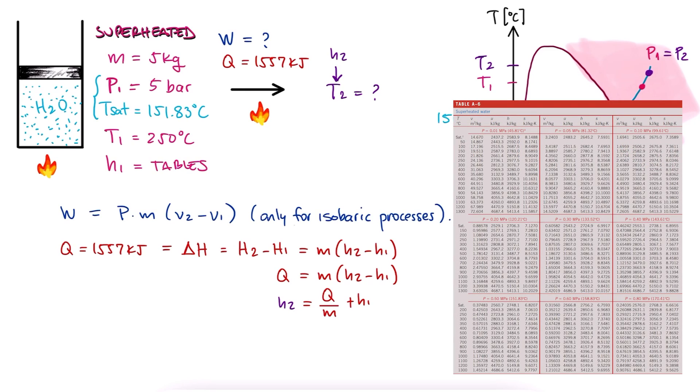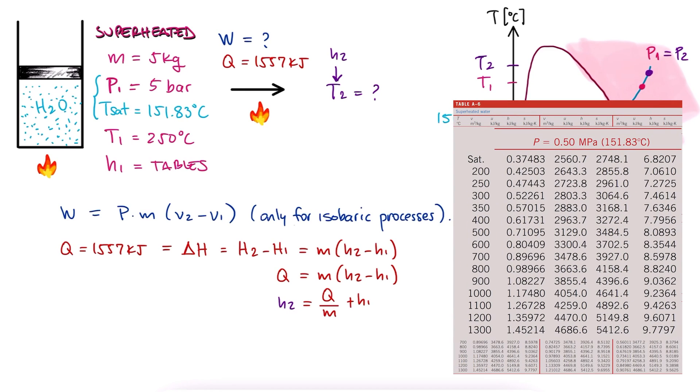By looking up a pressure of 0.5 MPa in the superheated tables, we see that for 250 degrees Celsius, the specific enthalpy is 2961.